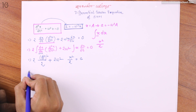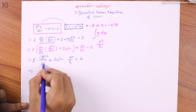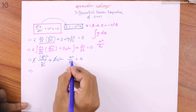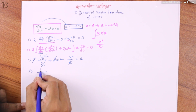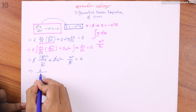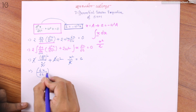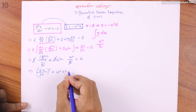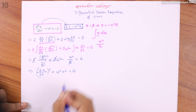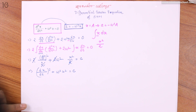After getting the integration, we set the limits. The result gives us: d/dt of x whole square plus omega square x square equal to C, a constant.